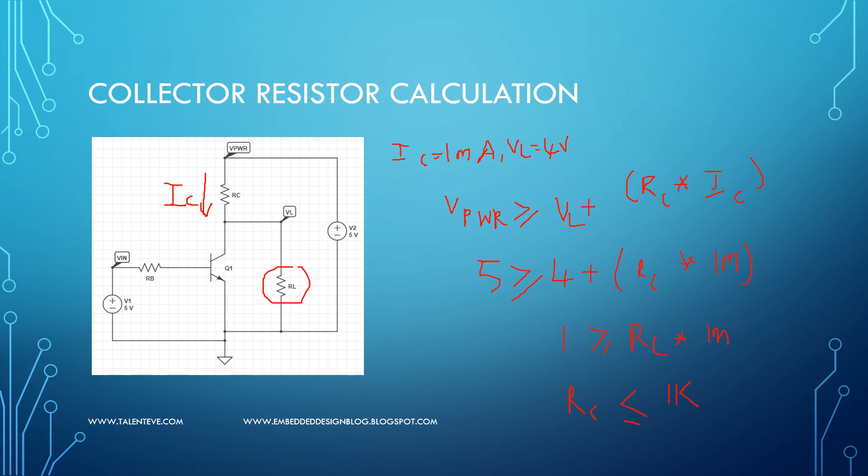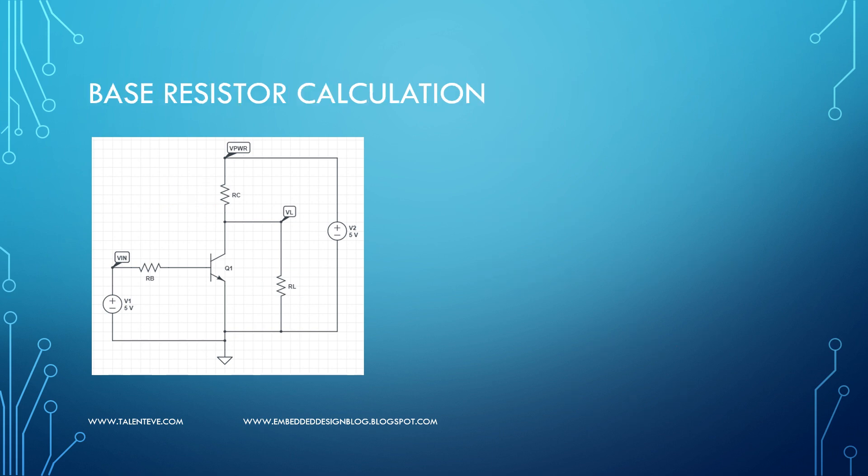Now let us see how to calculate the base resistor. So to calculate the base resistor, you apply a voltage of Vin is equal to 5 volts to the base. Okay, and then this is base, this is emitter.